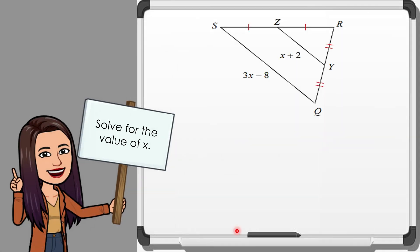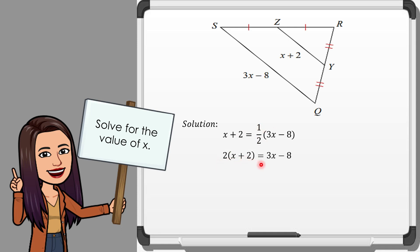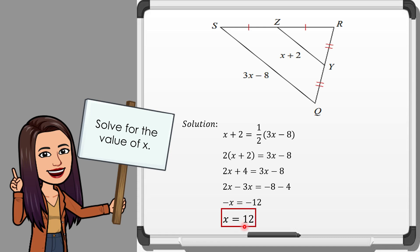Example number 2: we have the midline and the third side. Our equation is X plus 2 equals one half of (3X minus 8). Multiplying both sides by 2 gives 2(X plus 2) equals 3X minus 8. By the distributive property, 2X plus 4 equals 3X minus 8. Transposing terms gives 2X minus 3X equals negative 8 minus 4, so negative X equals negative 12. Multiplying both sides by negative 1, the value of X equals 12.